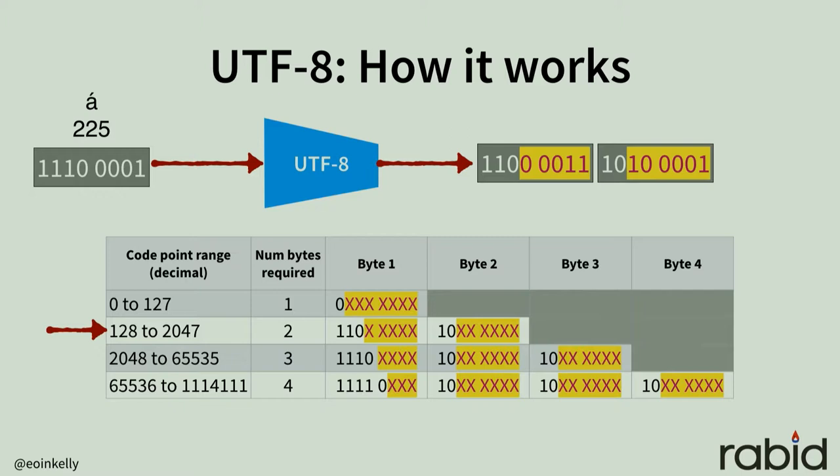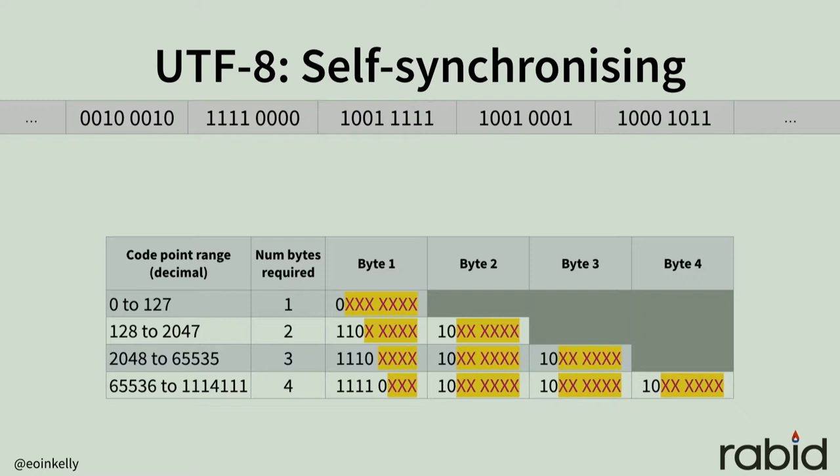UTF-8 has some really neat features. It's very space efficient — smaller numbers are encoded with fewer bytes. If you're familiar with the ASCII table, you'll notice that it's backwards compatible with ASCII, and that's not an accident. But there's one feature in particular which is really cool: it's self-synchronizing. That means that given a UTF-8 byte stream, we can drop into the middle of it anywhere and very quickly find our place.